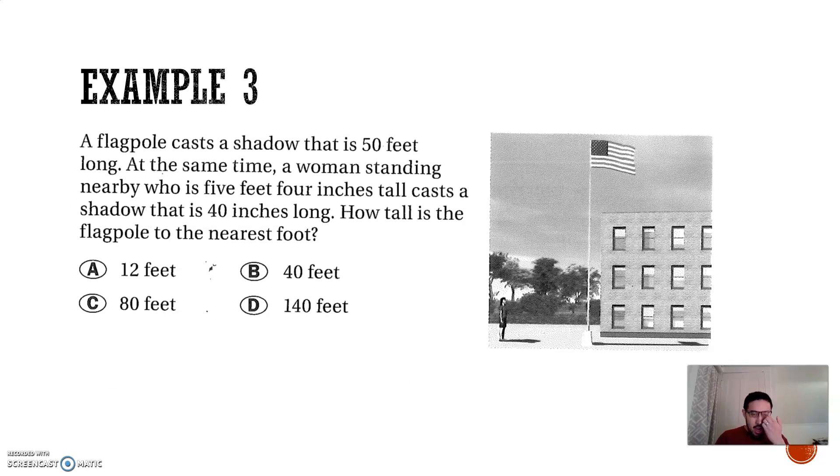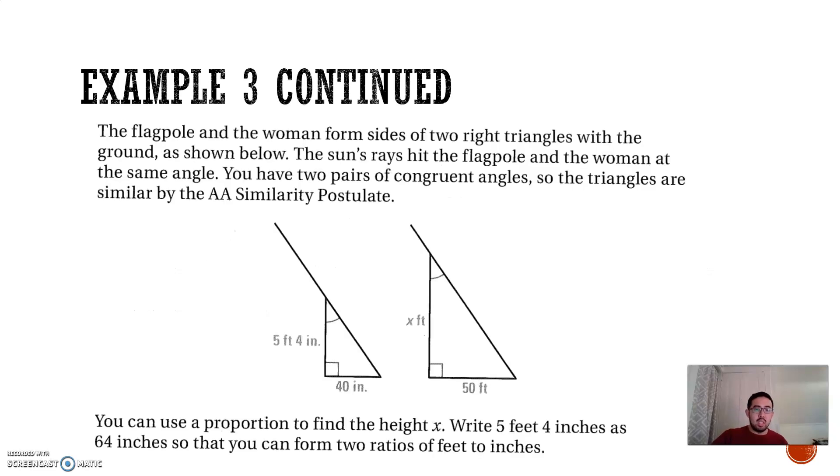So, a flagpole casts a shadow that is 50 feet long. At the same time, a woman standing nearby who is 5 feet 4 inches tall casts a shadow that is 40 inches long. How tall is the flagpole to the nearest foot? Now, the thing is, we are essentially assuming similarity here. We're assuming that the sun is hitting both of these at the same angle. So, if you have a woman that's 5 foot 4 inches tall and casts a 40 inch shadow, and then the flagpole is X feet tall, and it casts a 50 feet shadow, now I can write a proportion.